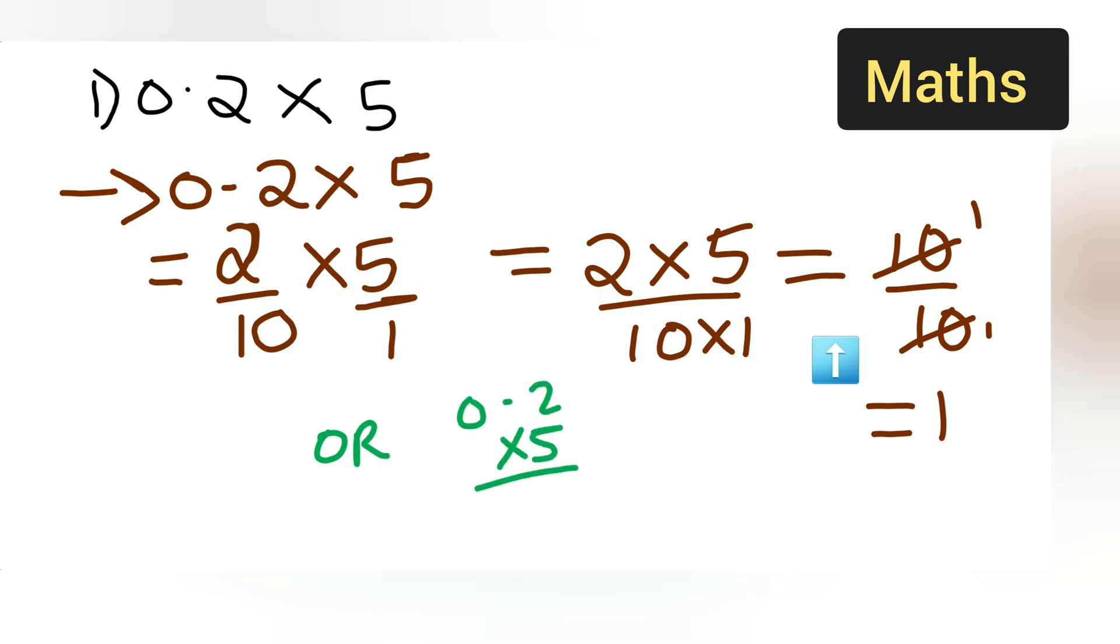5 times 2 gives you 10, and 5 times 0 is 0. Here it will be 1. The decimal point will come right over here, which means the answer will be 1 itself.